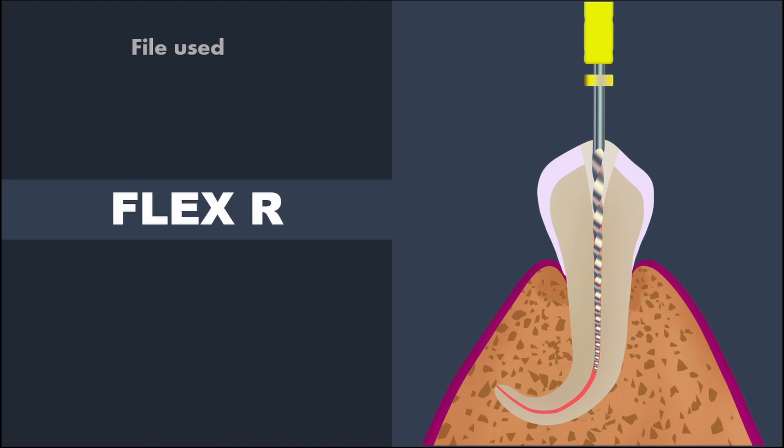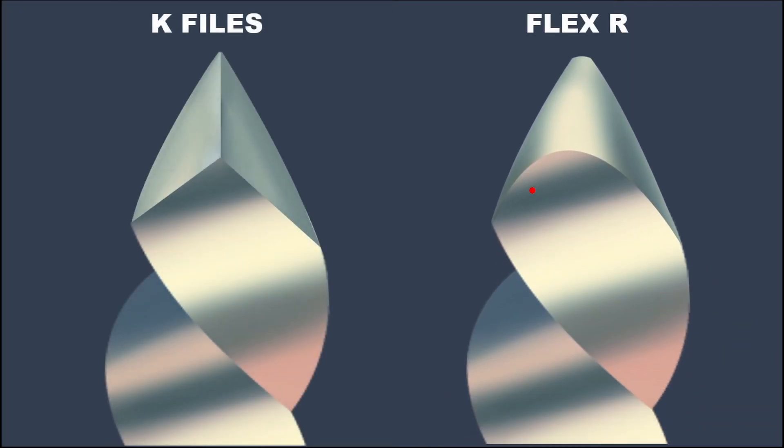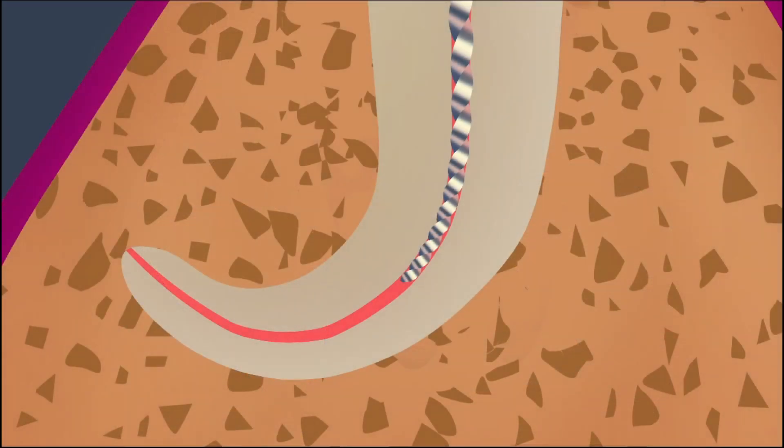This file is called the Flexor file. This file has a passive tip with rounder transition angle and a triangular cross section. This file is flexible and could penetrate deep inside the root canals without straightening of the canals when compared to K-files. The files are recommended to be used in a rotating motion for root canal preparation. Let's see about the canal preparation procedure using Flexor file following balanced force technique.